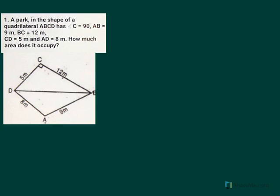A park in the shape of a quadrilateral ABCD has angle C equal to 90 degrees, AB equal to 9 meters, BC equal to 12 meters, CD equal to 5 meters, and AD equal to 8 meters. How much area does it occupy?